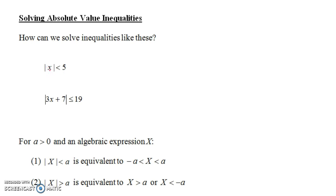Notice that 3 would make it true, but 7 wouldn't. What about negative numbers? Negative 3 would also make it true, because the absolute value of negative 3 is 3, and that's less than 5. But negative 7 wouldn't work. It turns out the solution is all the values of x that are between minus 5 and 5 — and notice that it became a compound inequality.